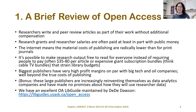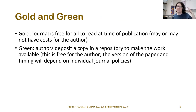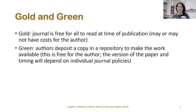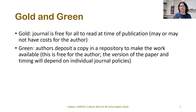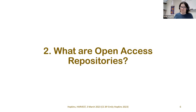We have an excellent open access LibGuide maintained by Edie that you should check out. There are a few kinds of open access, but the two main ones relevant today are: Gold, where the journal is free for all to read at publication — this may have author processing charges (APCs); and Green, where authors deposit a copy in a repository to make the work available, which is free for the author. The version of the paper and how quickly it can be shared depends on individual journal policies.